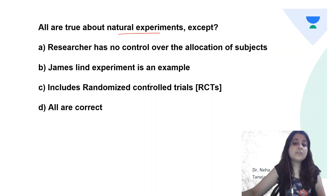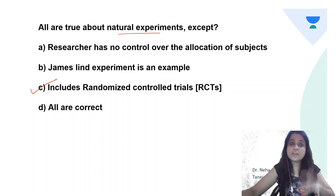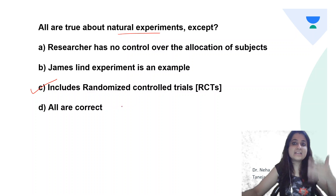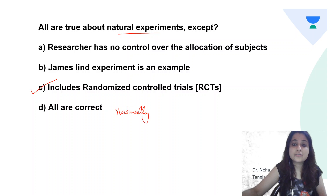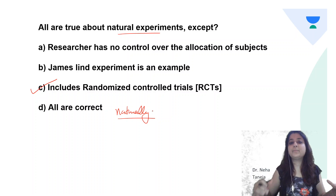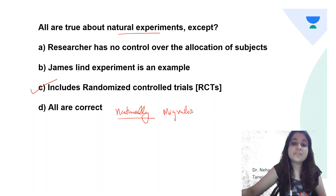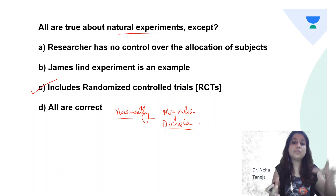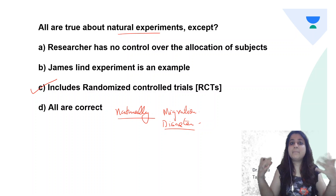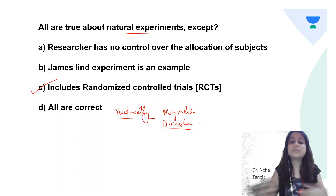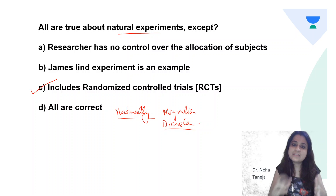Next question: all are true about natural experiments except — researcher has no control over the allocation of subjects, James Lind experiment is an example, includes RCT, or all are correct. The answer is RCT is not part of natural experiments. Natural experiments are not randomized control trials. As a researcher you don't do any interventions — groups are naturally divided, like in migration studies or during a disaster, which automatically divides people into victims and non-victims.